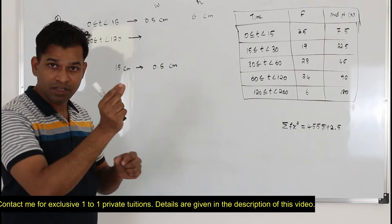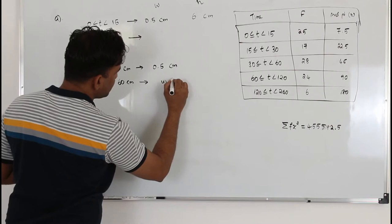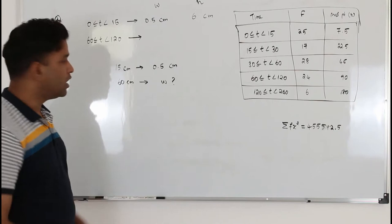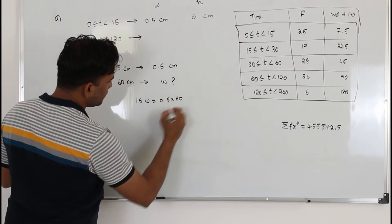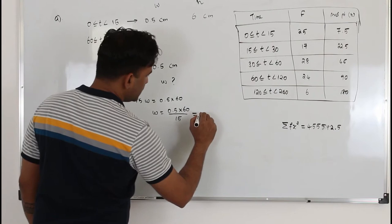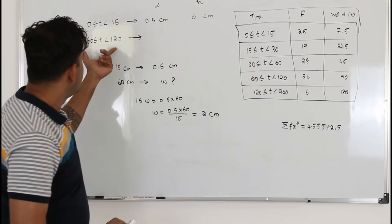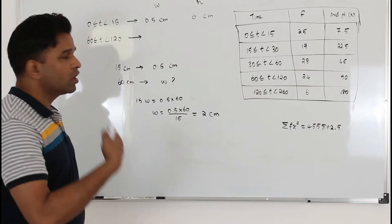For the interval 60 to 120, the class width is 60. So we set up a proportion: 15 maps to 0.5 centimeters, and 60 maps to W. Cross-multiplying: W equals 0.5 times 60 divided by 15, which gives W equals 2 centimeters. So the width of the bar representing this interval is 2 centimeters.